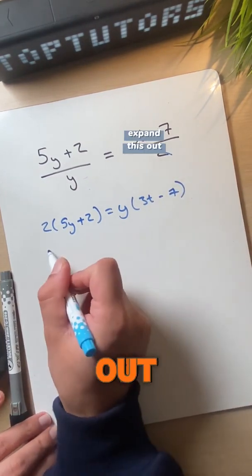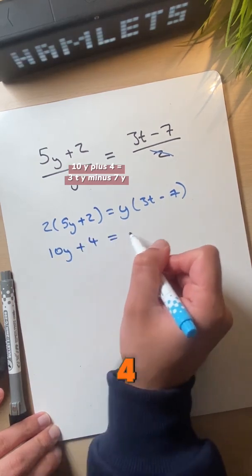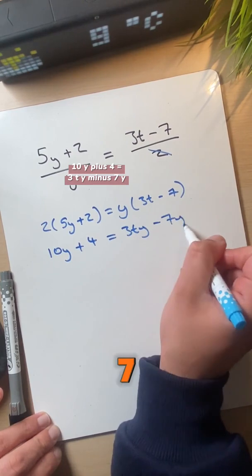Let's expand this out. That's 10y plus 4 equals 3ty minus 7y.